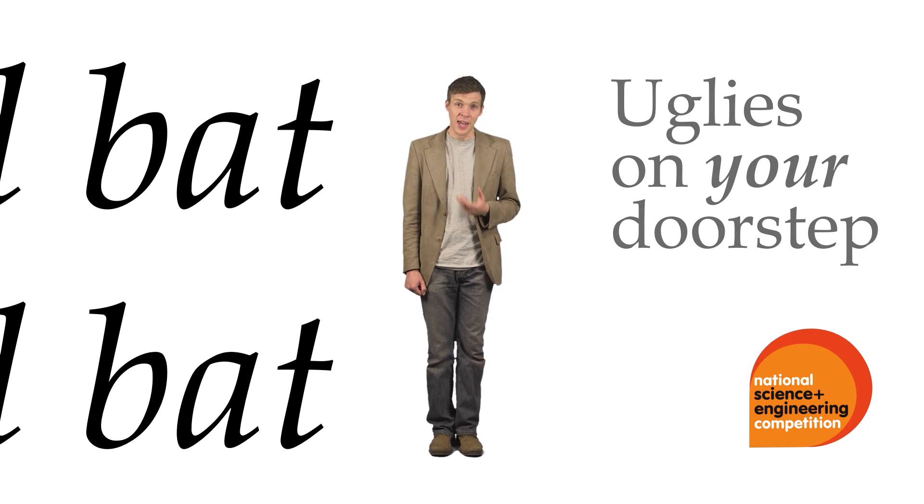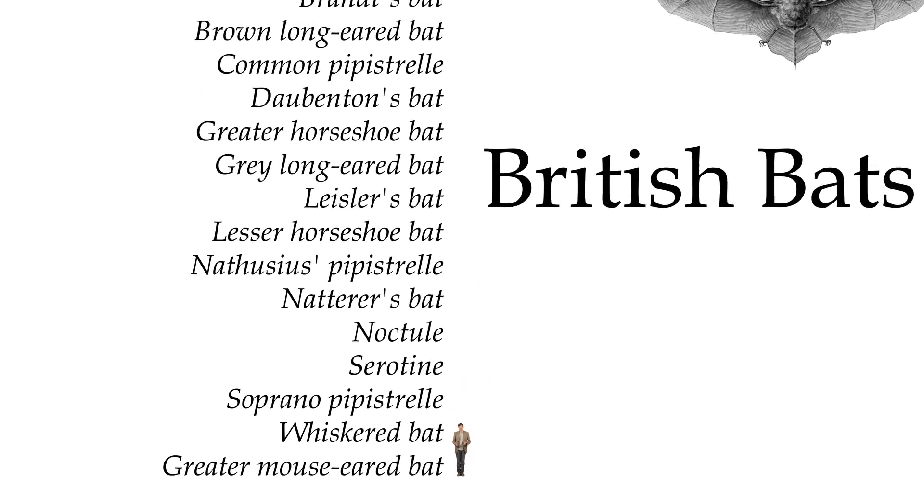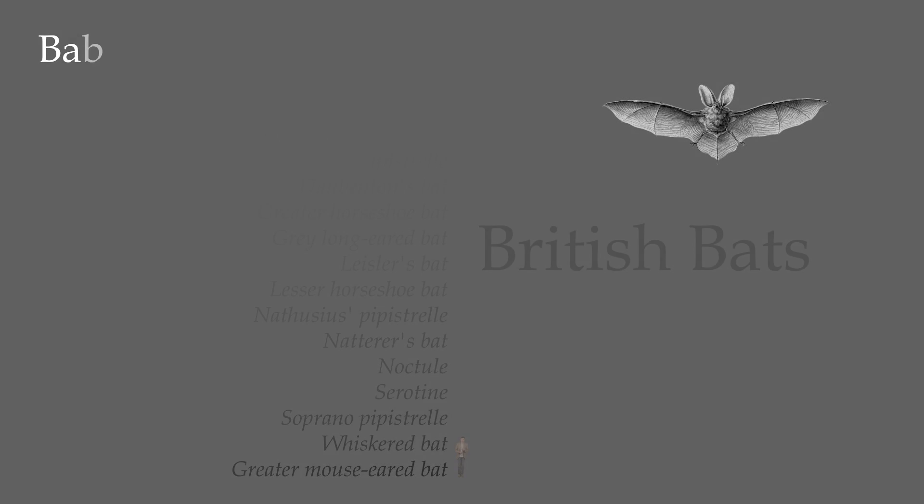We're lucky enough to have 18 species of bat in the UK, 17 of which are known to be breeding here. That's almost a quarter of our mammal species. Unfortunately though, over half of the species we have here are endangered or threatened.